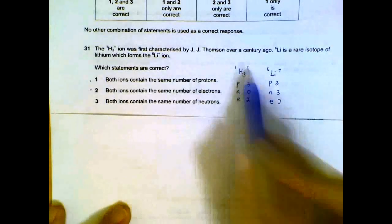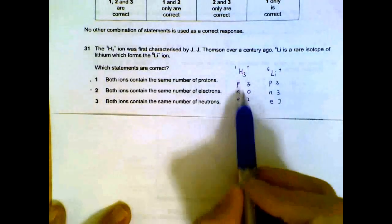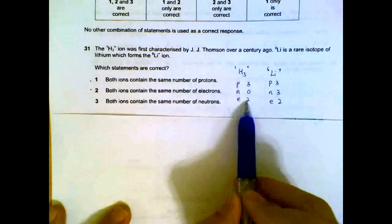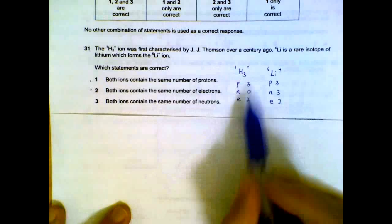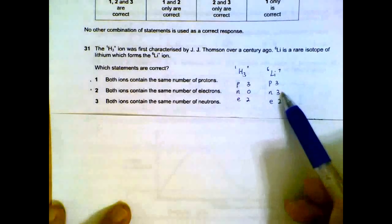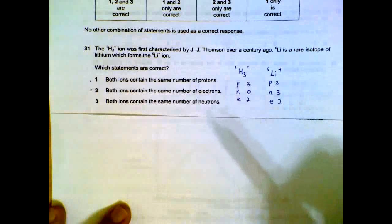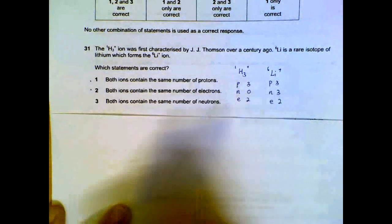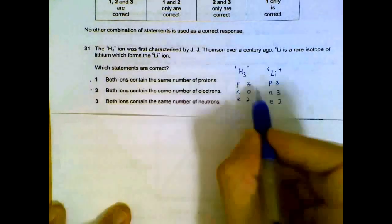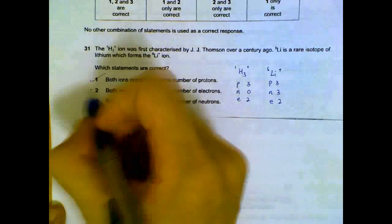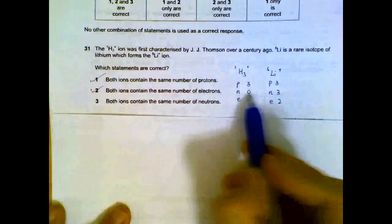Question 31. H3+ and Li+. The number of protons will be 3, neutrons 0, electrons will be 2 so that we have a charge of plus 1. For the next species, 3 protons, 3 neutrons, and 2 electrons. So once we have this set out, we can see that both of them contain the same number of protons and the same number of electrons. Neutrons, they are different.